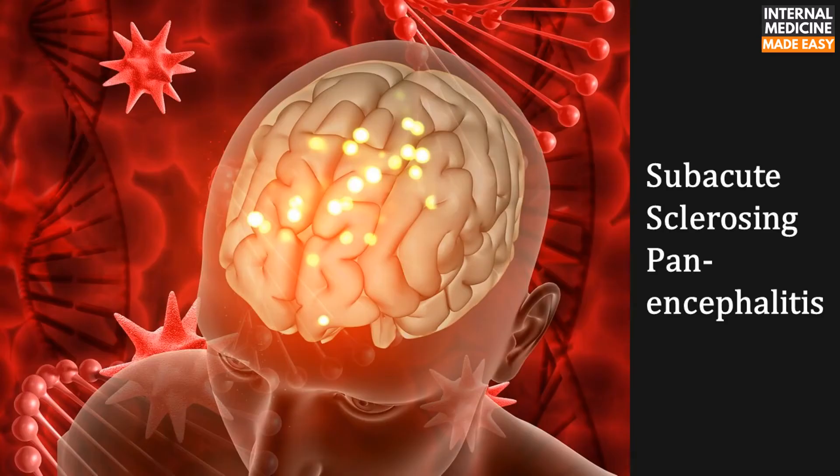Subacute sclerosing panencephalitis was first described under the name inclusion body encephalitis, because of the eosinophilic inclusions found in the cytoplasm and nuclei of neurons and glial cells. Later, it was renamed as subacute sclerosing panencephalitis.